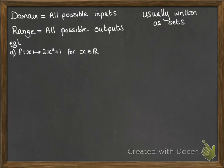For example, here we have the mapping of x maps onto 2x squared plus 1 for x being all the real numbers. This is what it would look like if we drew it. The domain is where x is all the real numbers. That's already given to us in the question. The range is anything that f(x) could be. The smallest it could possibly be would be 1.